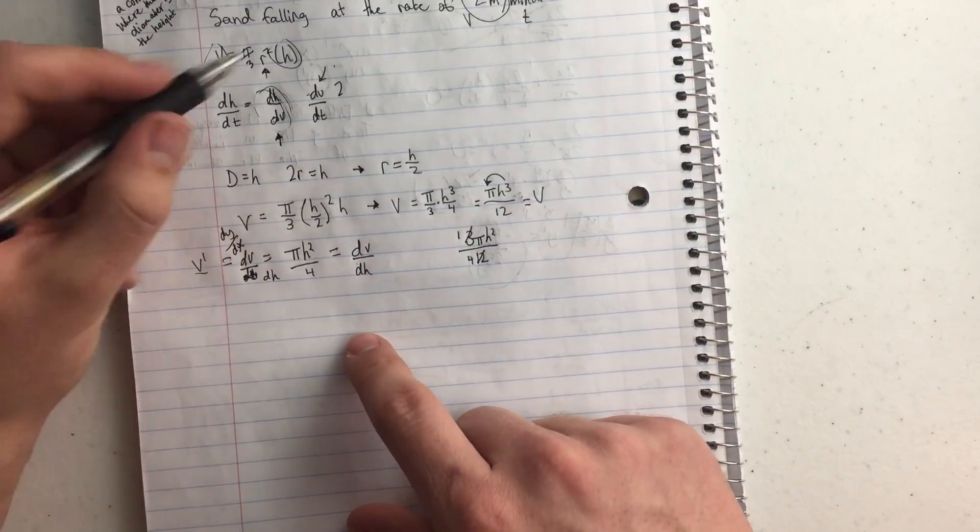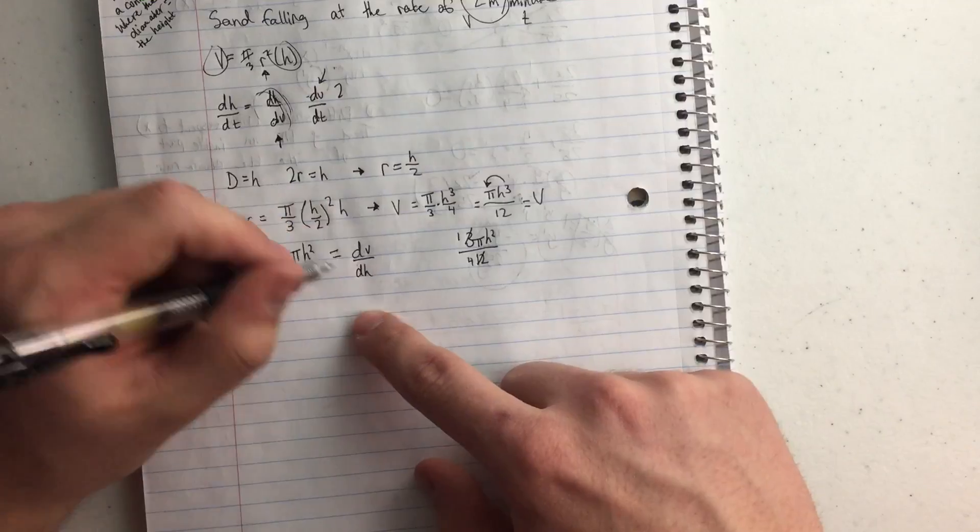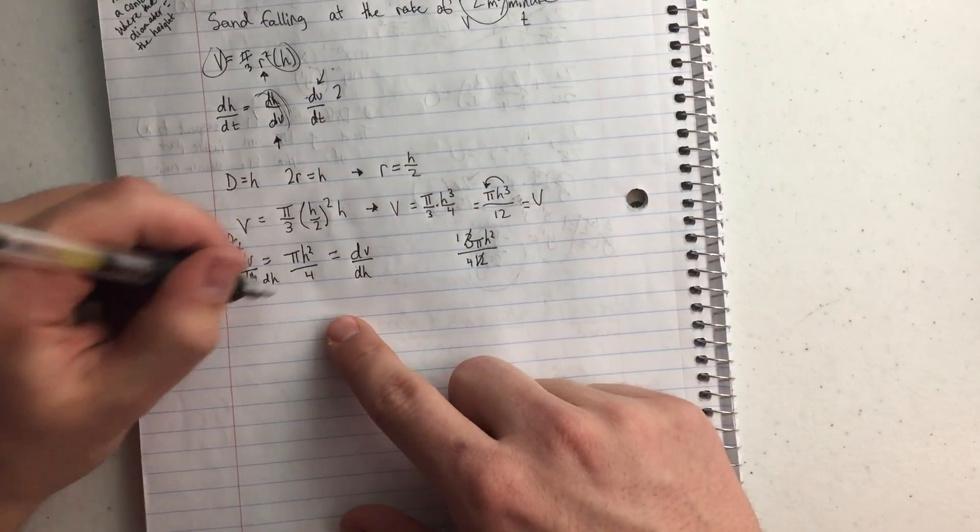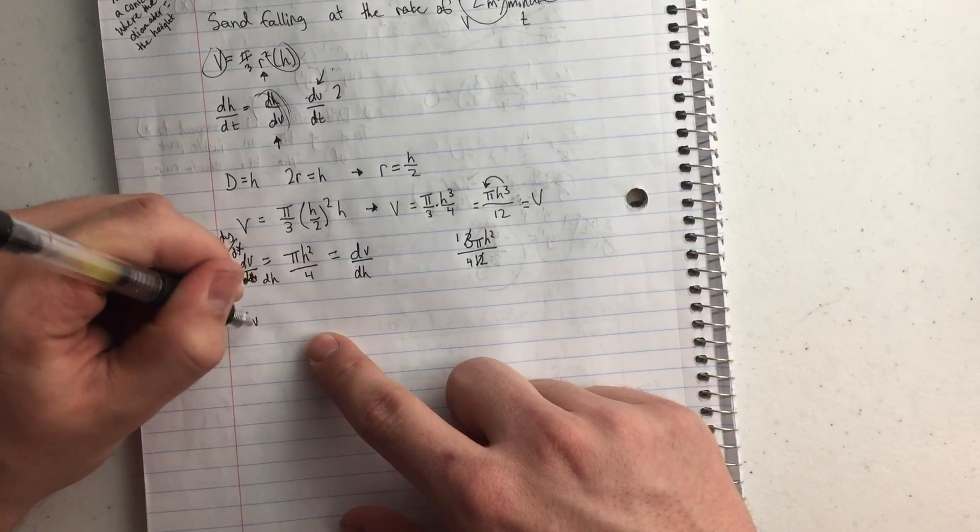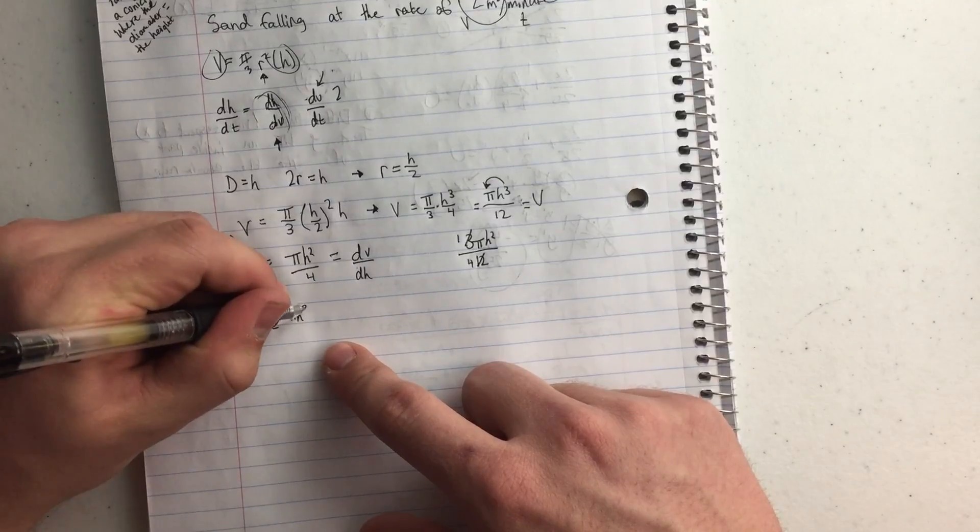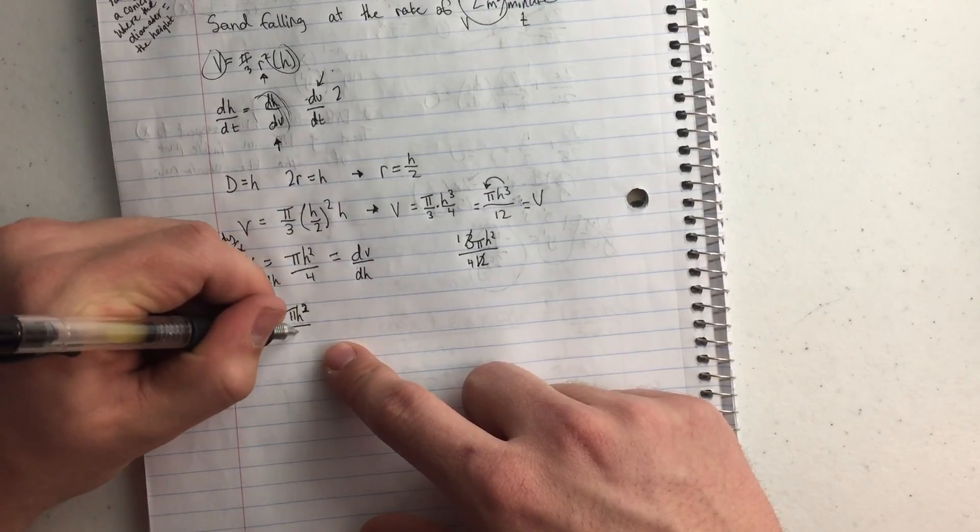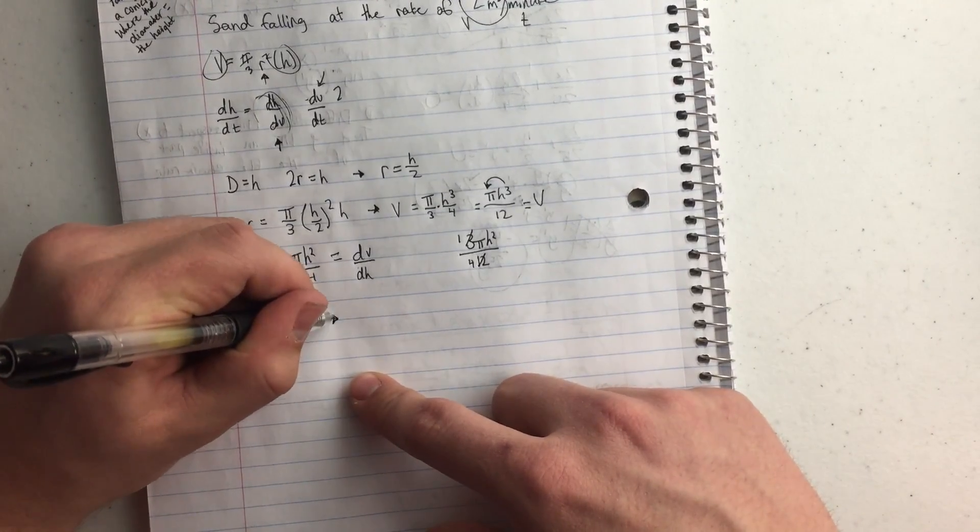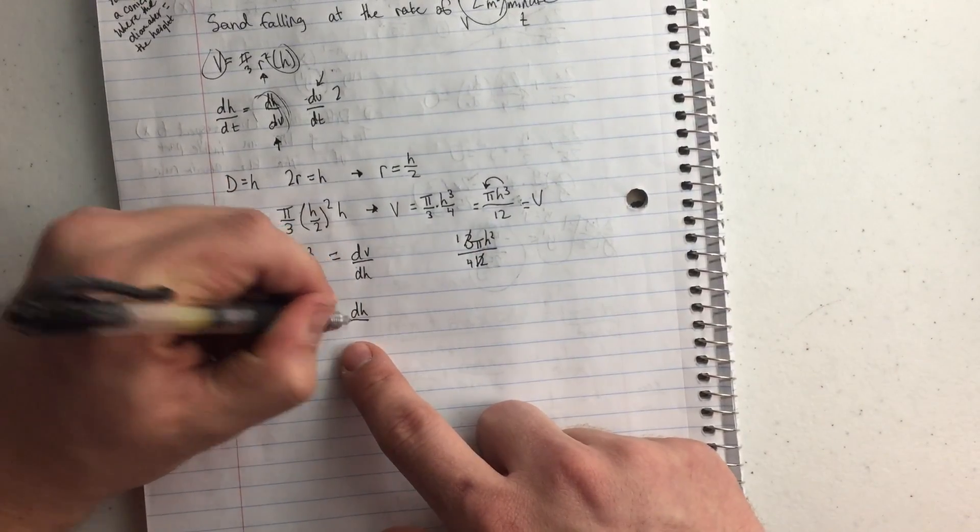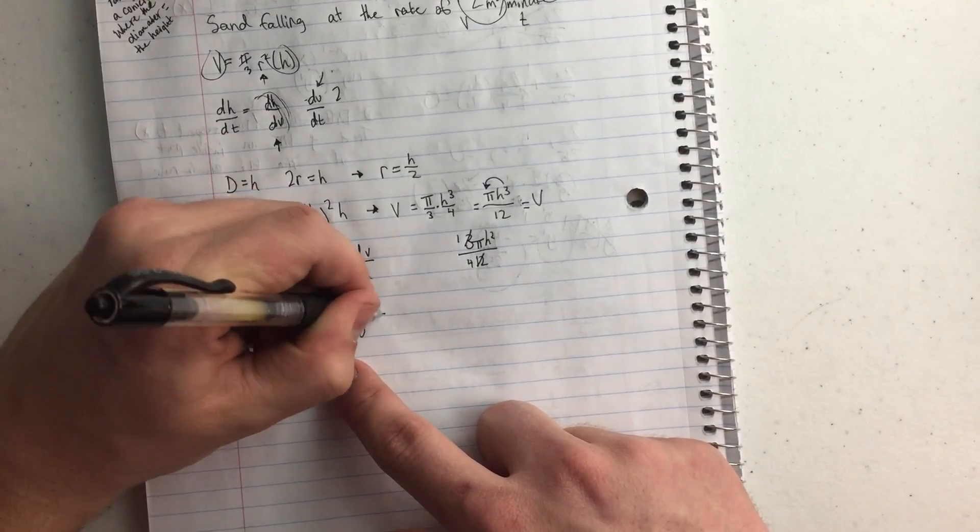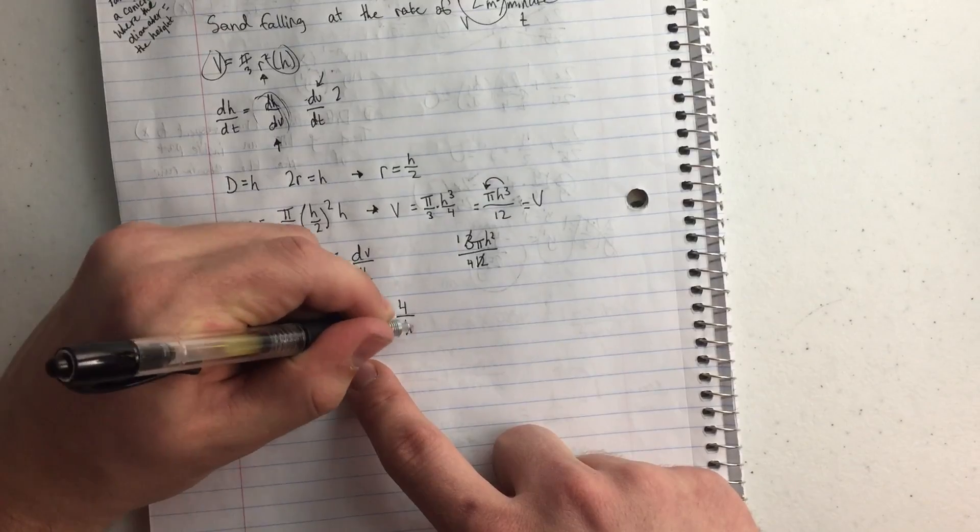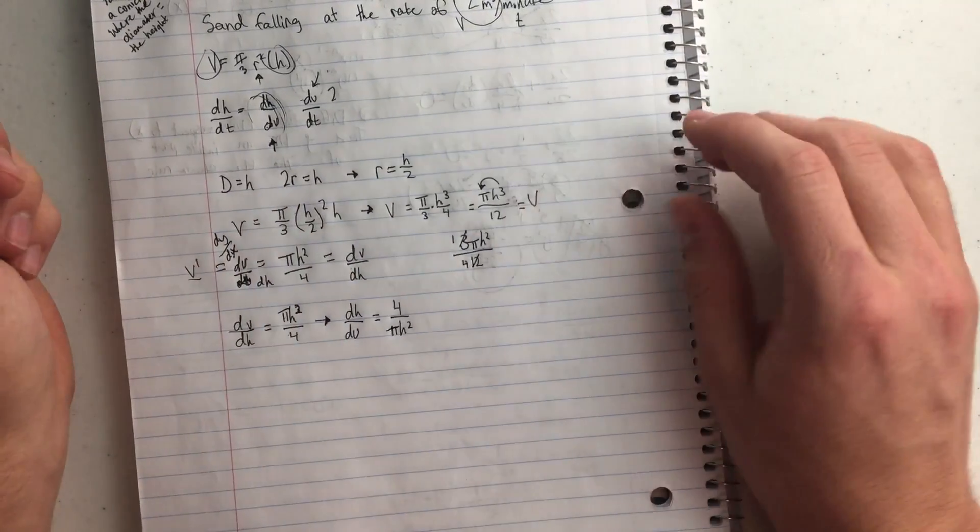So now what I'm going to do is, I need the change in height over the change in volume. So what I'm going to do is flip the fraction over. And if I just flip it over, find the reciprocal, if you will, dh over dv equals 4 over pi h squared.